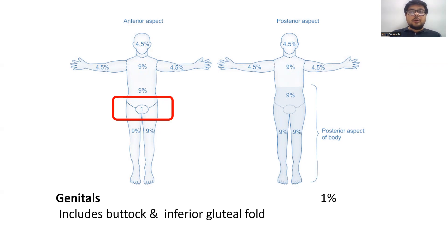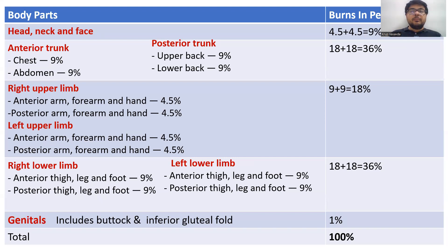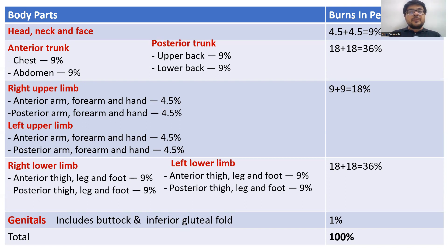Now let us summarize the whole concept of the Rule of 9 — how much body surface area is included if a person has suffered from burns. Head, neck, and face: 9%. Anterior and posterior trunk: 36%. Right and left upper limbs: 18%. Right and left lower limbs: 36%. Genitals: 1%. The total comes to 100%, and this is the estimation according to Wallace Rule of 9.